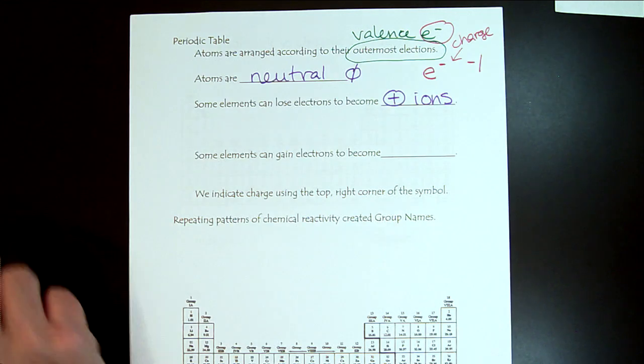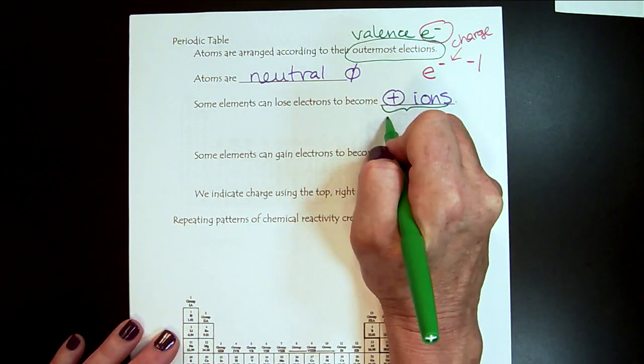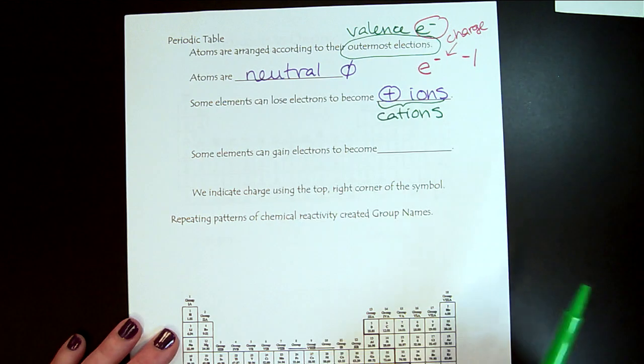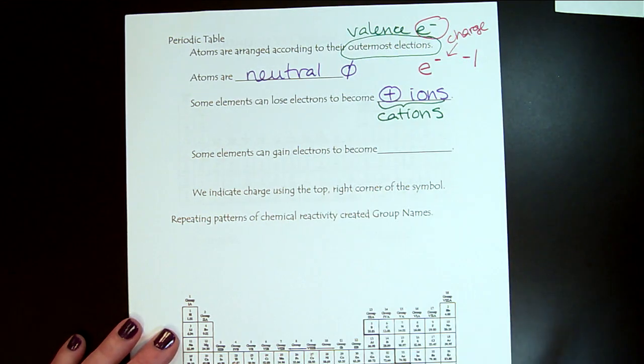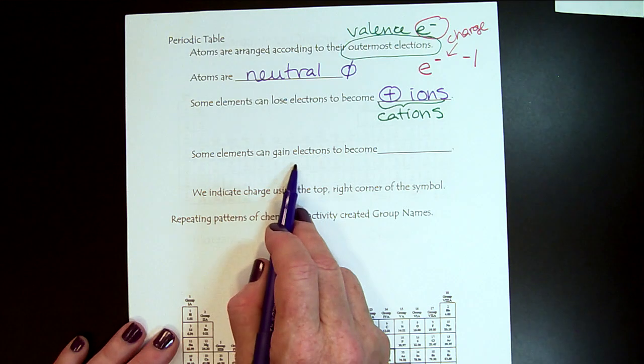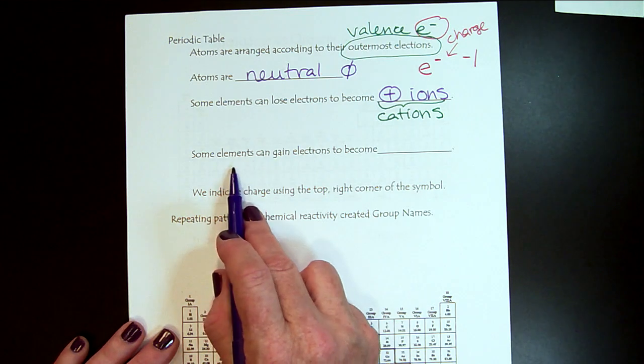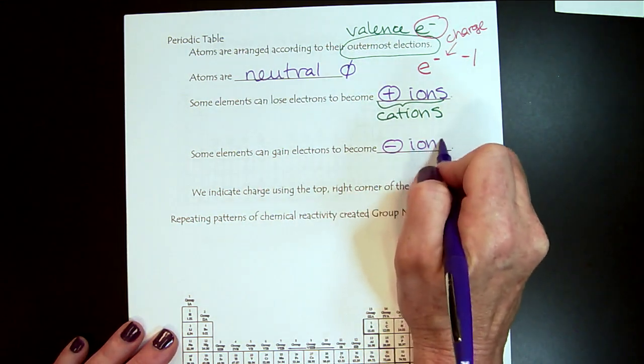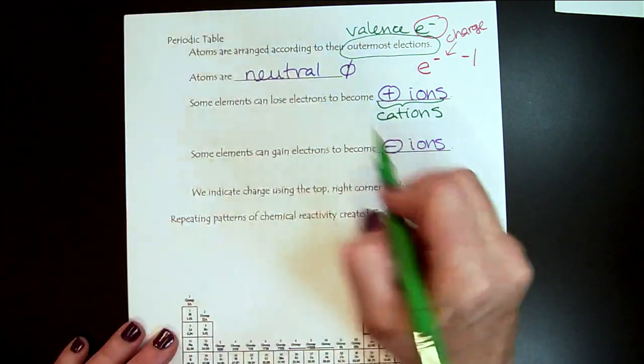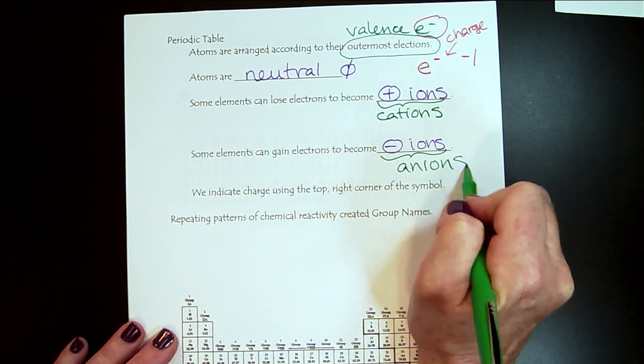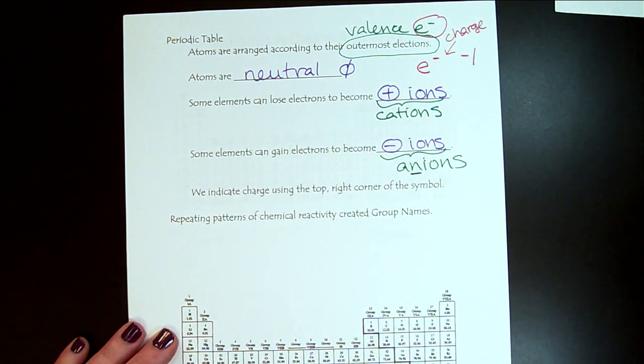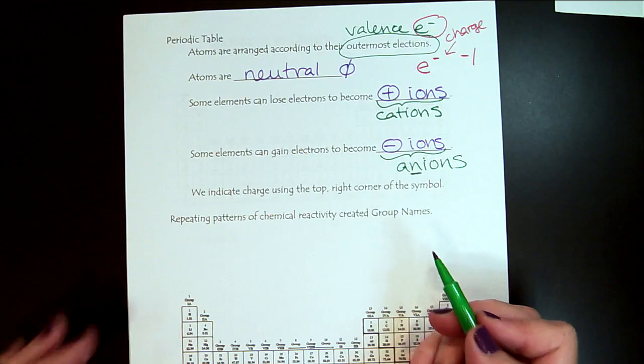If an element can lose electrons, what happens to the overall charge? It started neutral and we lost those negative electrons. So then those elements become positive ions. The term that we use for positive ions is cations. When I was learning this, to me the T looked like a plus sign. So that helped me remember that cations are positive ions. Other elements will gain electrons. If they gain negative charge, they're going to become negative ions. Those are called anions. The T was for the plus for positive ions and the anions, that negative N is negative for the anions.